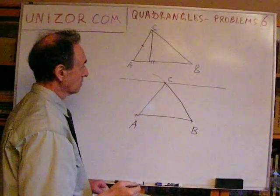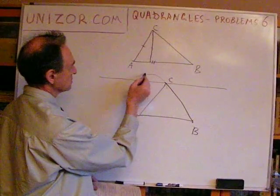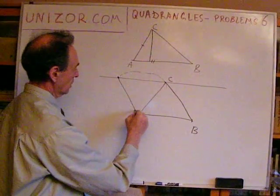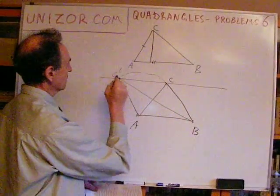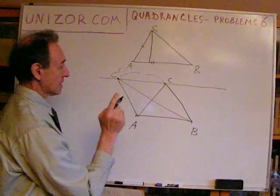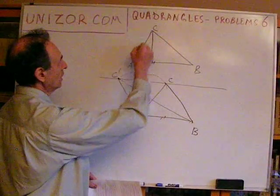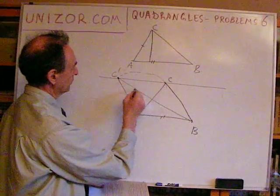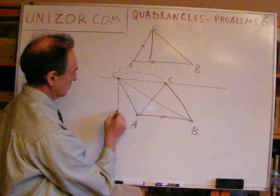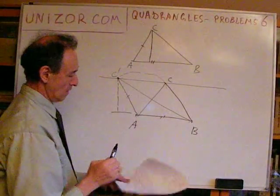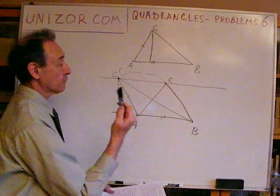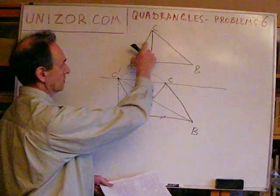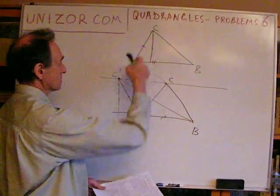Obviously, you can have more than one solution if this circle intersects the parallel line in another point. So this is another C prime — triangle ABC prime — which has exactly the same base AB, the same side AC, and the same altitude drawn towards the base. This particular problem might have two solutions, one solution if the circle is just touching the parallel line, or no solutions if the segment given as side AD is too short.